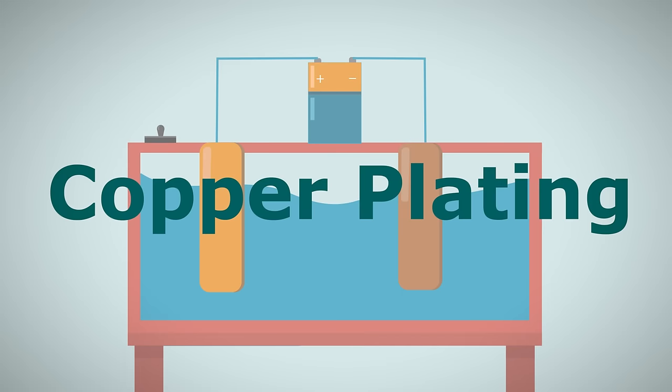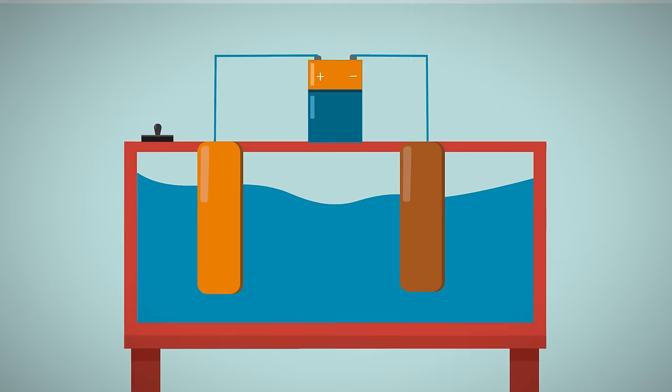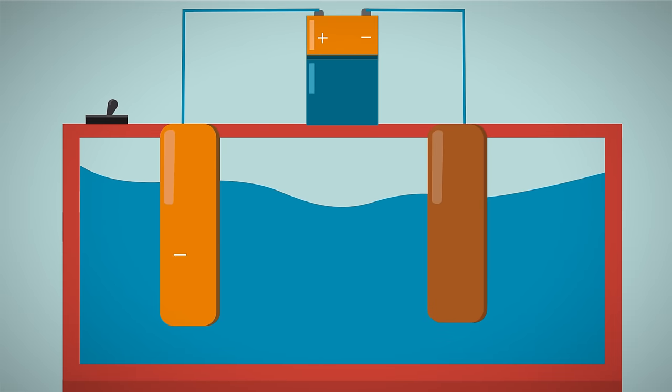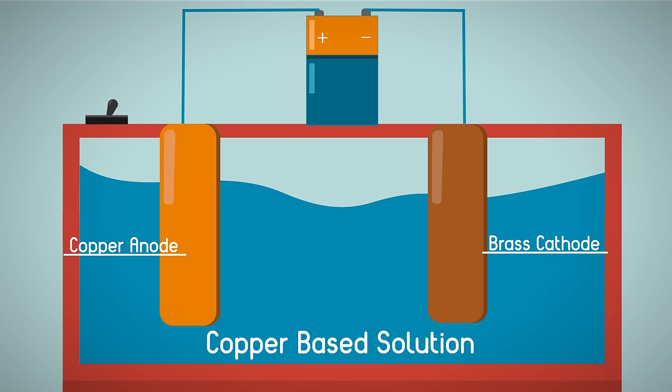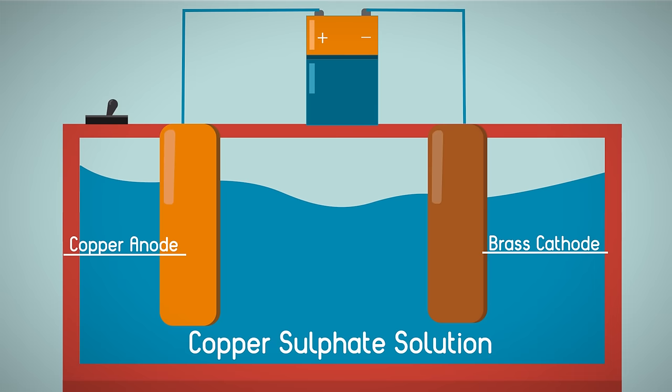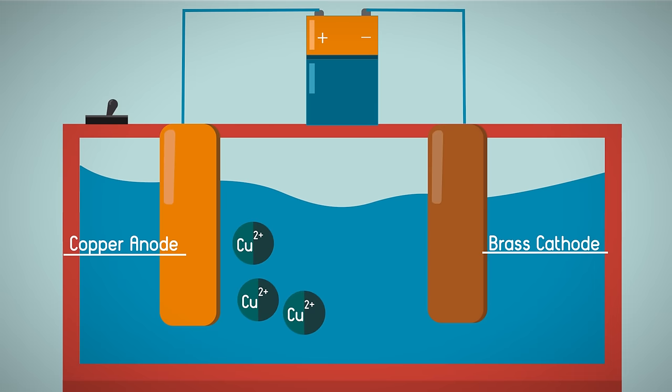So let's look at copper plating as an example. We want to copper plate some brass. So we have a copper anode, a brass cathode, and a copper-based solution for the electrolyte. It's a copper sulfate solution. Copper sulfate solution contains blue copper ions and colorless sulfate ions.